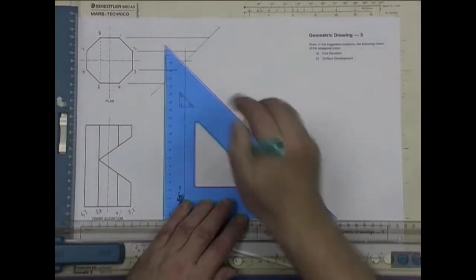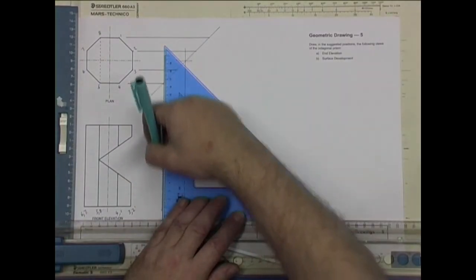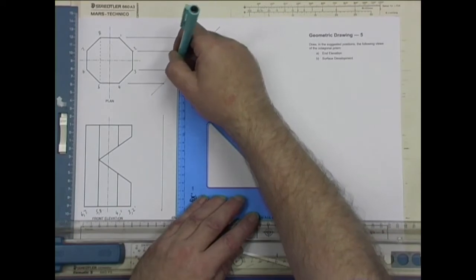And then it's just a matter of projecting across to the abutment line. And then we're getting there. We're going to draw the full elevation first.